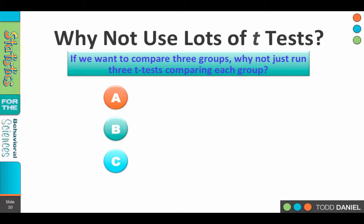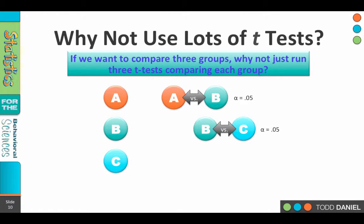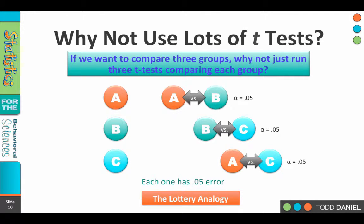What we could do is take our three groups — A, B, and C — and run a t-test comparing A to B. When we did that, we would have an alpha of 0.05, which means a 5% chance of making a type 1 error. We'd run a second t-test comparing B to C, and again the alpha would be set at 0.05. A third t-test would compare A to C, also with a 0.05 chance of getting a type 1 error. So each of these three t-tests would have a 0.05 error rate, or alpha level.